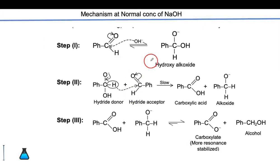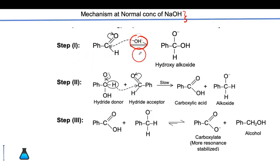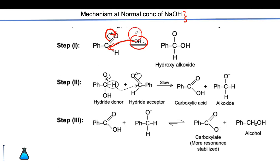Let's see the mechanism of the Cannizzaro reaction in the presence of concentrated NaOH. In the very first step, the OH minus, which is a base, acts as a nucleophile — because of the absence of alpha hydrogen — and attacks the carbonyl carbon. When OH minus attacks this carbon, both electrons are accepted by the oxygen, and it is converted to O minus.